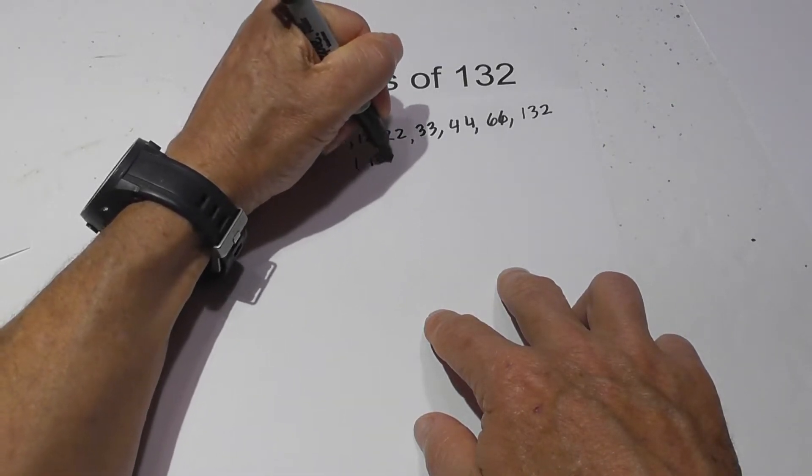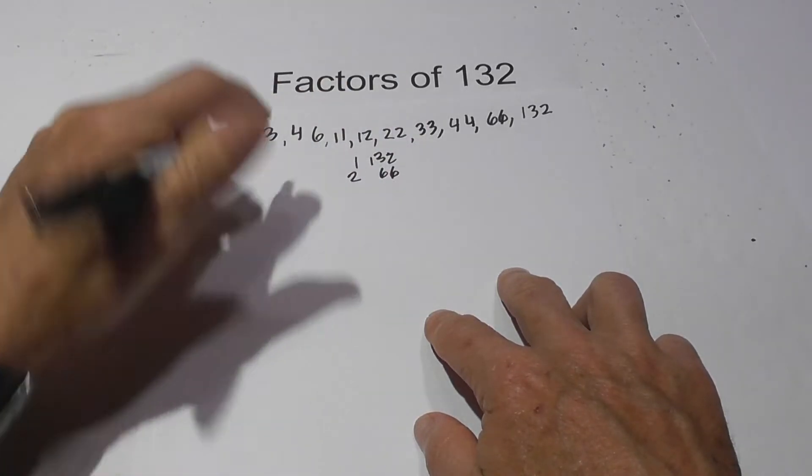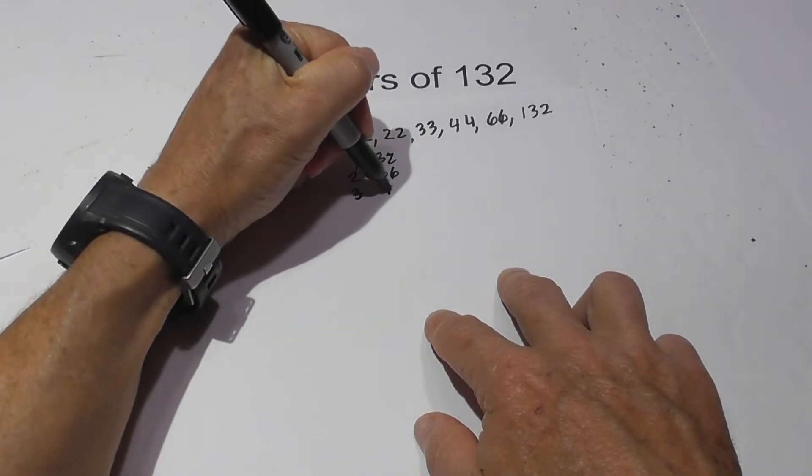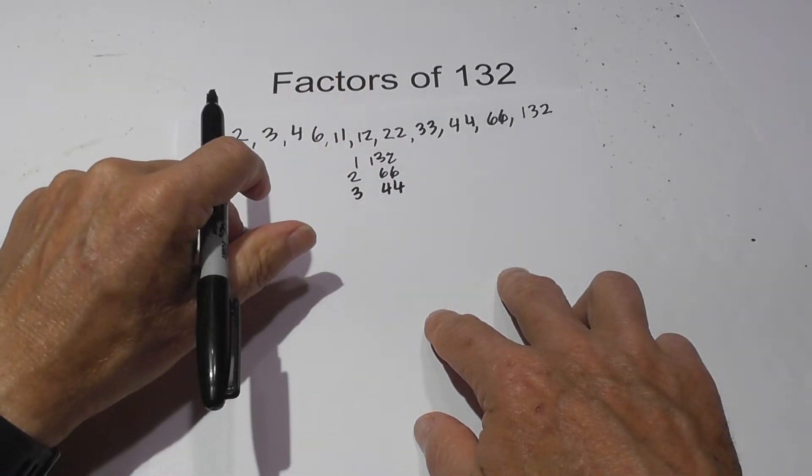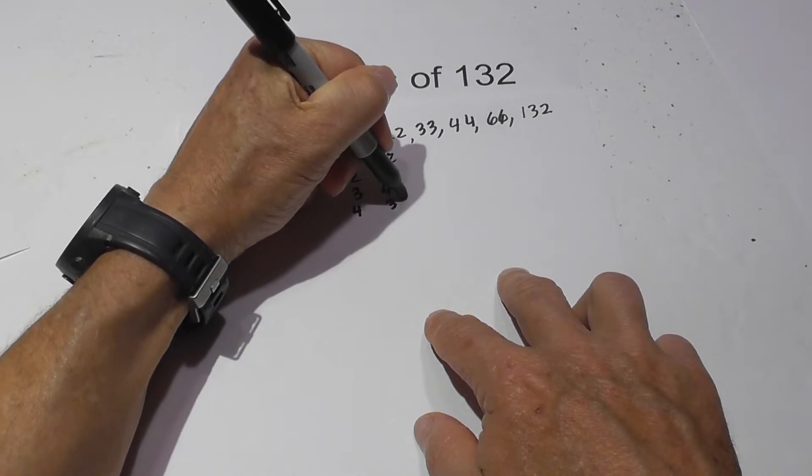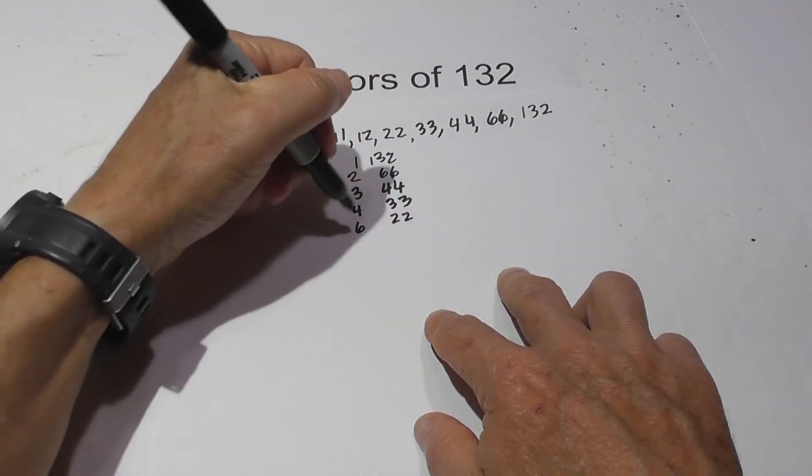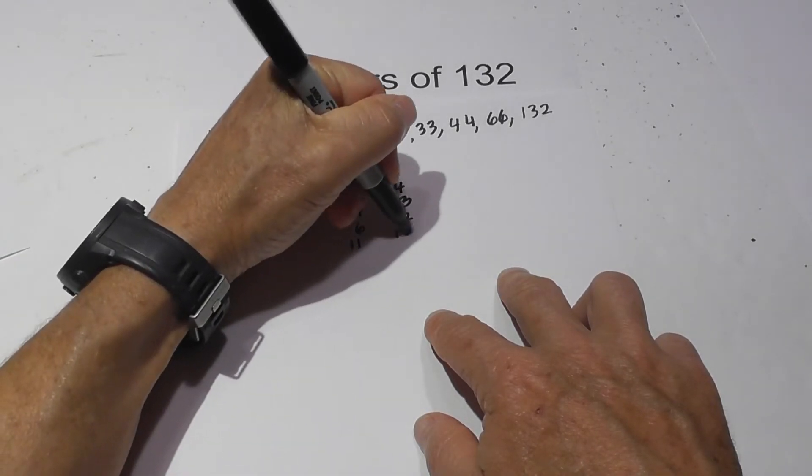You have 1 times 132, then we have 2 times 66, then we have 3 times 44, and 4 times 33, 6 times 22, and 11 and 12.